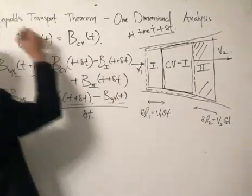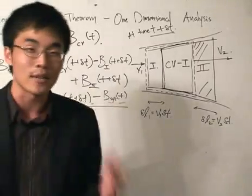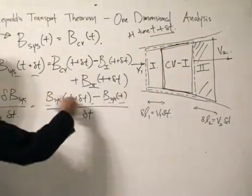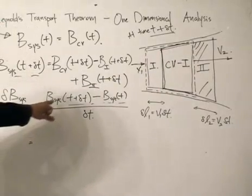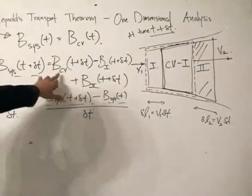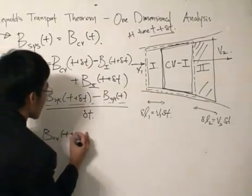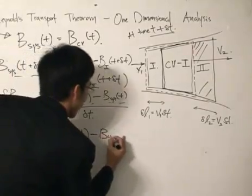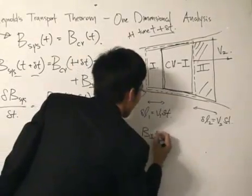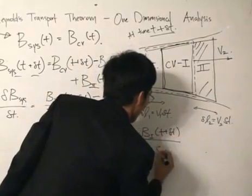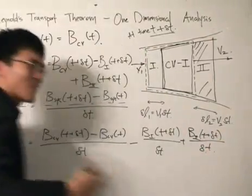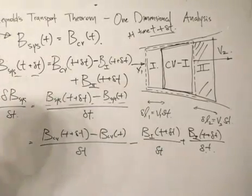We are going to use our initial condition — at time T, the system of particles coincides with the control volume, so their extensive properties are equal. Rearranging and making the substitution, we get: the control volume term at T plus delta T minus the control volume term at T, divided by delta T; then subtract B1 at T plus delta T divided by delta T; then add B2 at T plus delta T divided by delta T. This is the main equation we have to start with, and we'll handle each term carefully.